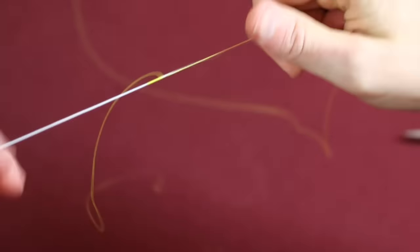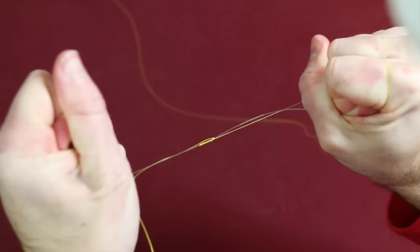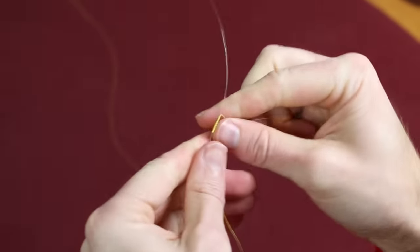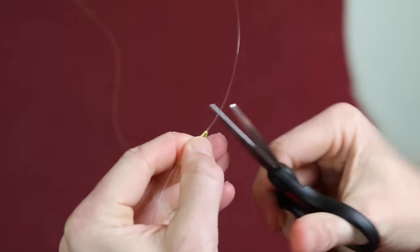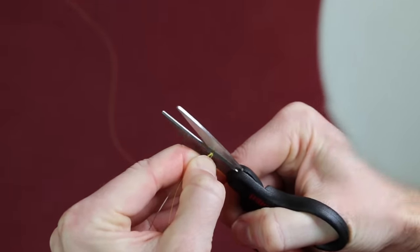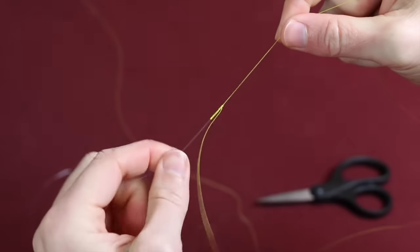There we are. So now we have our loops all cinched there together. At this point, we'll go ahead and grab the two main lines and just pull the entire thing tight. So now we can clip the fluorocarbon leader off. At this point, you can really cut it as close as you possibly can without nicking the braid. There you are. So now this is really it.